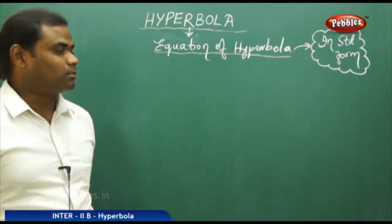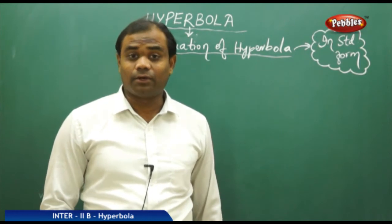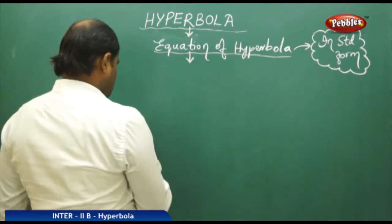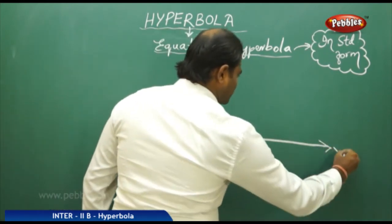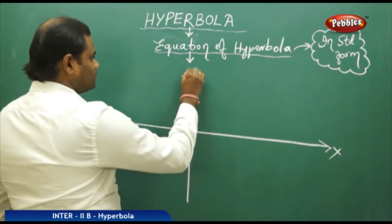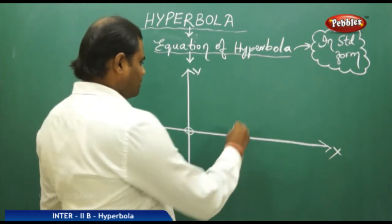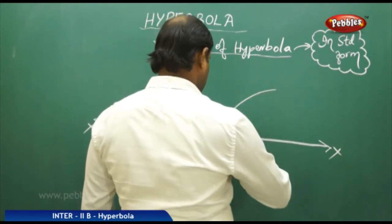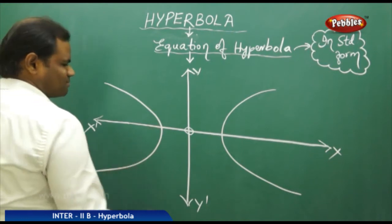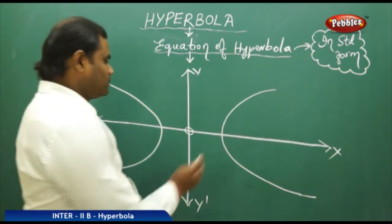Now let's see the equation of hyperbola. Before we discuss the standard form, it is important to identify the shape of hyperbola on the XY coordinate system. Suppose I have my X axis and Y axis with center at the origin. A hyperbola looks like a bi-parabola — two parabolas on either side, symmetric about the Y axis.